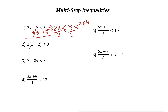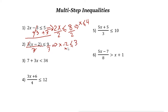Next one: 3(x minus 2) less than or equal to 9. The first step, we want to get rid of the 3, so divide both sides by 3. These two 3s cancel out. It just becomes x minus 2 less than or equal to 9 divided by 3, which is 3. Now the next step is easy — add 2 to both sides, then x is less than or equal to 5.